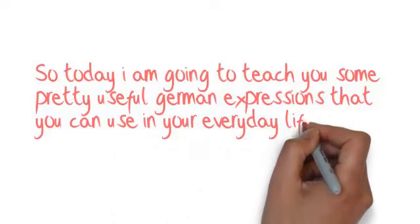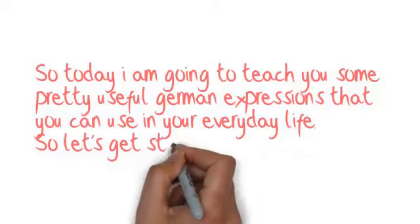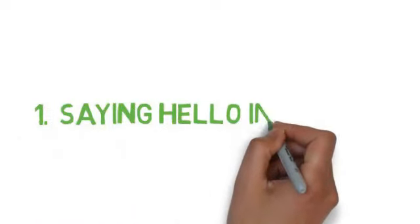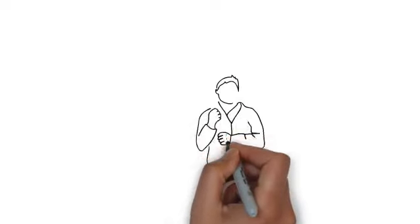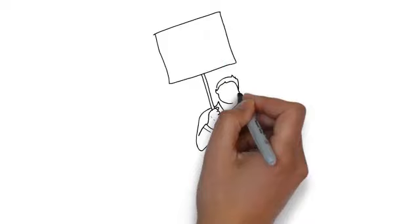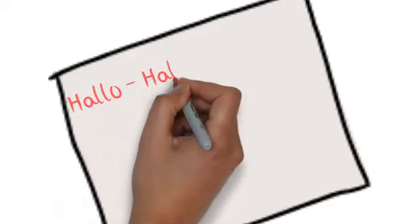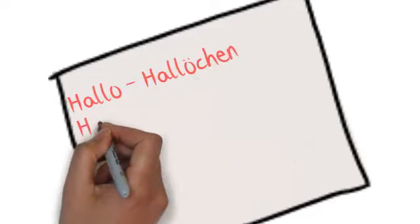So let's get started. The first thing to know is saying hello in German. To say hello in German, there are a lot of ways. The most common is 'Hallo'. Also you can say 'Hallotion' or 'Hallihallo'.